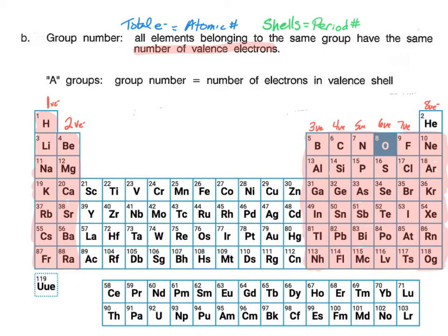So how many valence electrons does oxygen have? That's correct. It should have six valence electrons. So does sulfur, selenium, tellurium, polonium, and livermorium. And that is because they are in group six A.